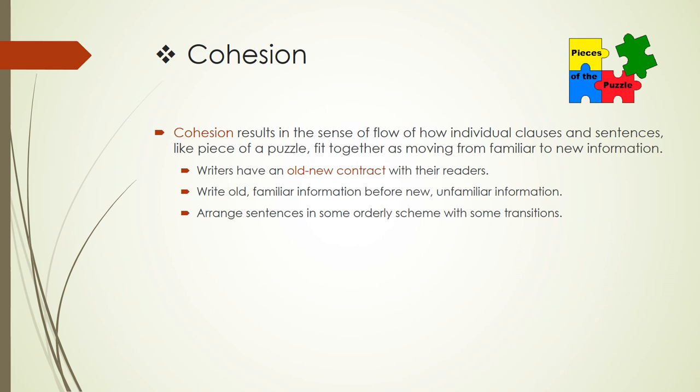To improve cohesion, writers should place familiar information first in each sentence, such as making familiar characters the subjects of sentences. Then, as a helpful practice, writers should number their main points — first, second, third, and so forth — to create order, transitions, and flow among sentences.